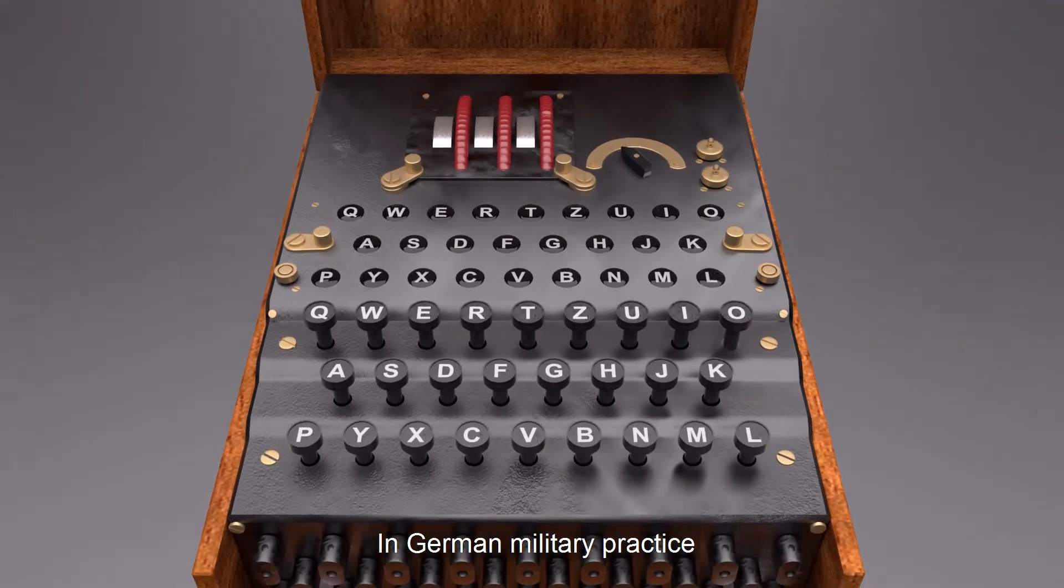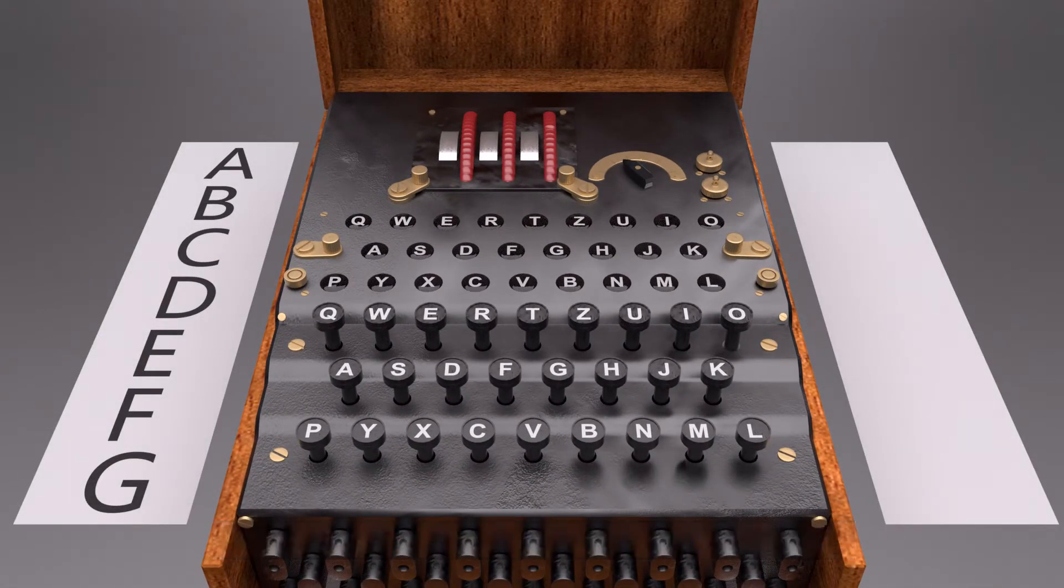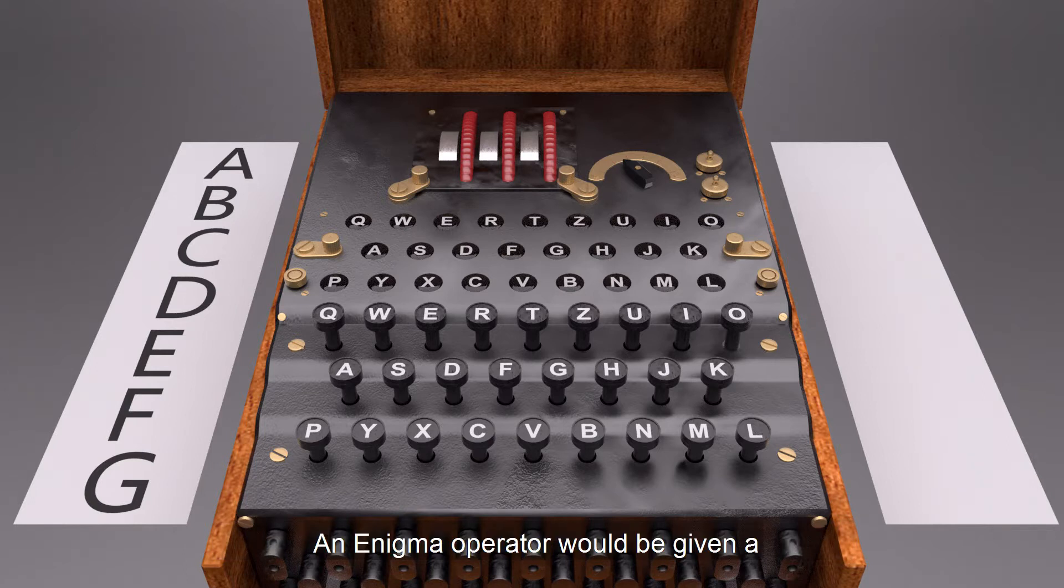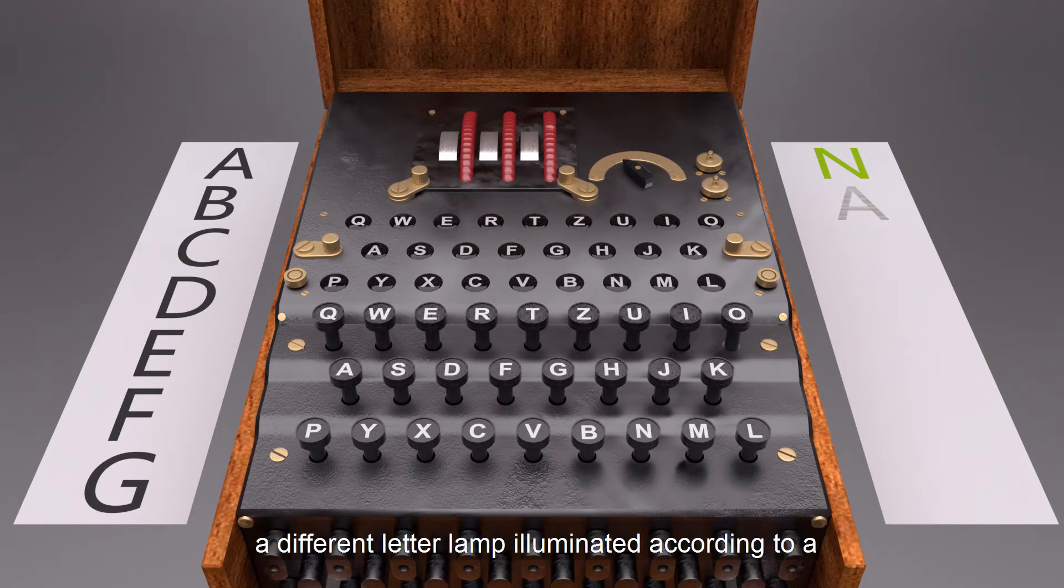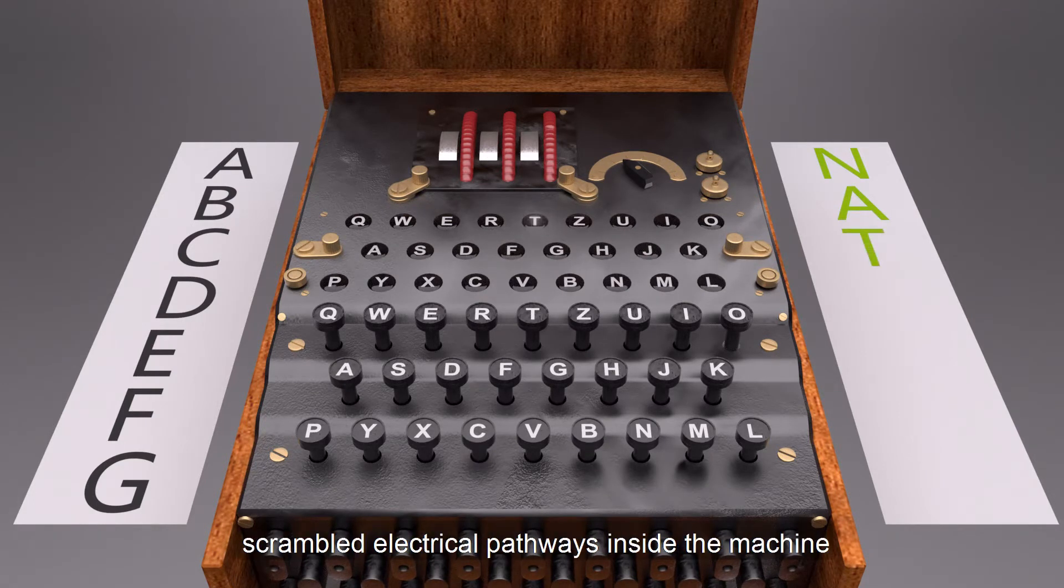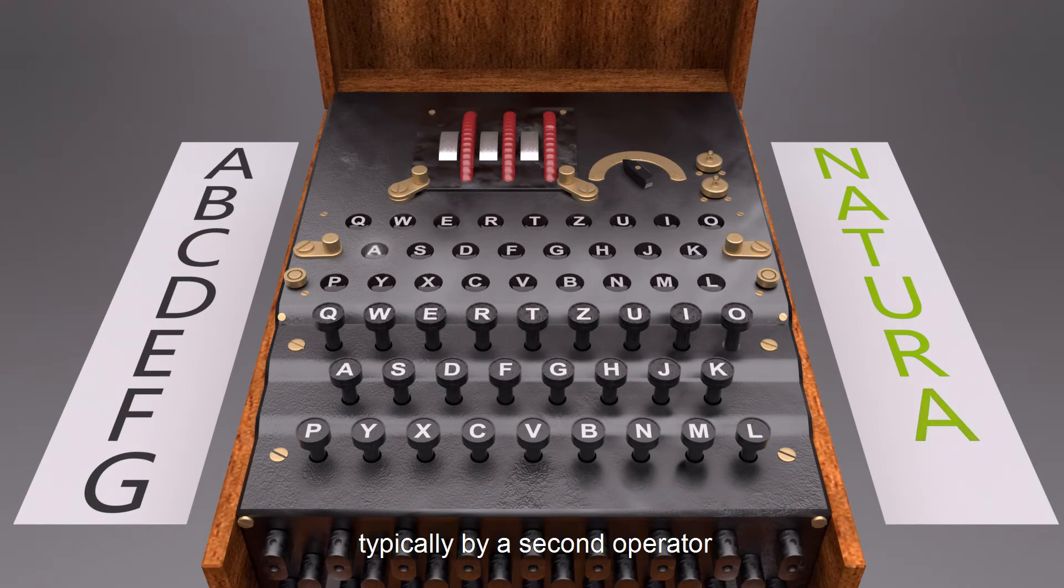In German military practice, communications were divided into separate networks. An Enigma operator would be given a plain text message to encrypt. He had to set up the machine first and then type the message on the Enigma keyboard. For each letter pressed, a different letter lamp illuminated according to a scrambled electrical pathways inside the machine. The letter illuminated would be recorded, typically by a second operator, as the ciphertext letter.